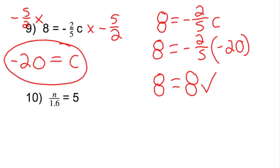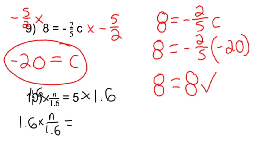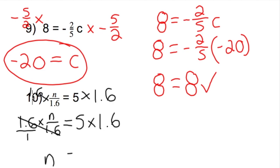Now the final one: n divided by 1.6 equals 5. I want to get n by itself, so I have to do the inverse operation. The opposite of dividing by 1.6 is multiplying by 1.6. Whatever I do on one side, I have to do on the other. On the left side, I put the 1.6 over 1 — these cancel, leaving n times 1, which is just n. On the right side, 5 times 1.6 gives me 8. So n equals 8.